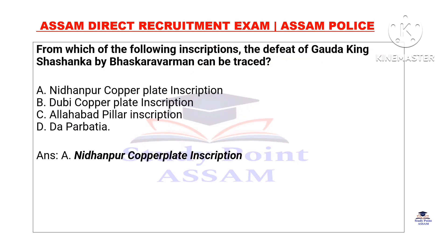From which of the following inscriptions can the conflict between Gauda King Sasanka and Bhaskar Varman be traced?